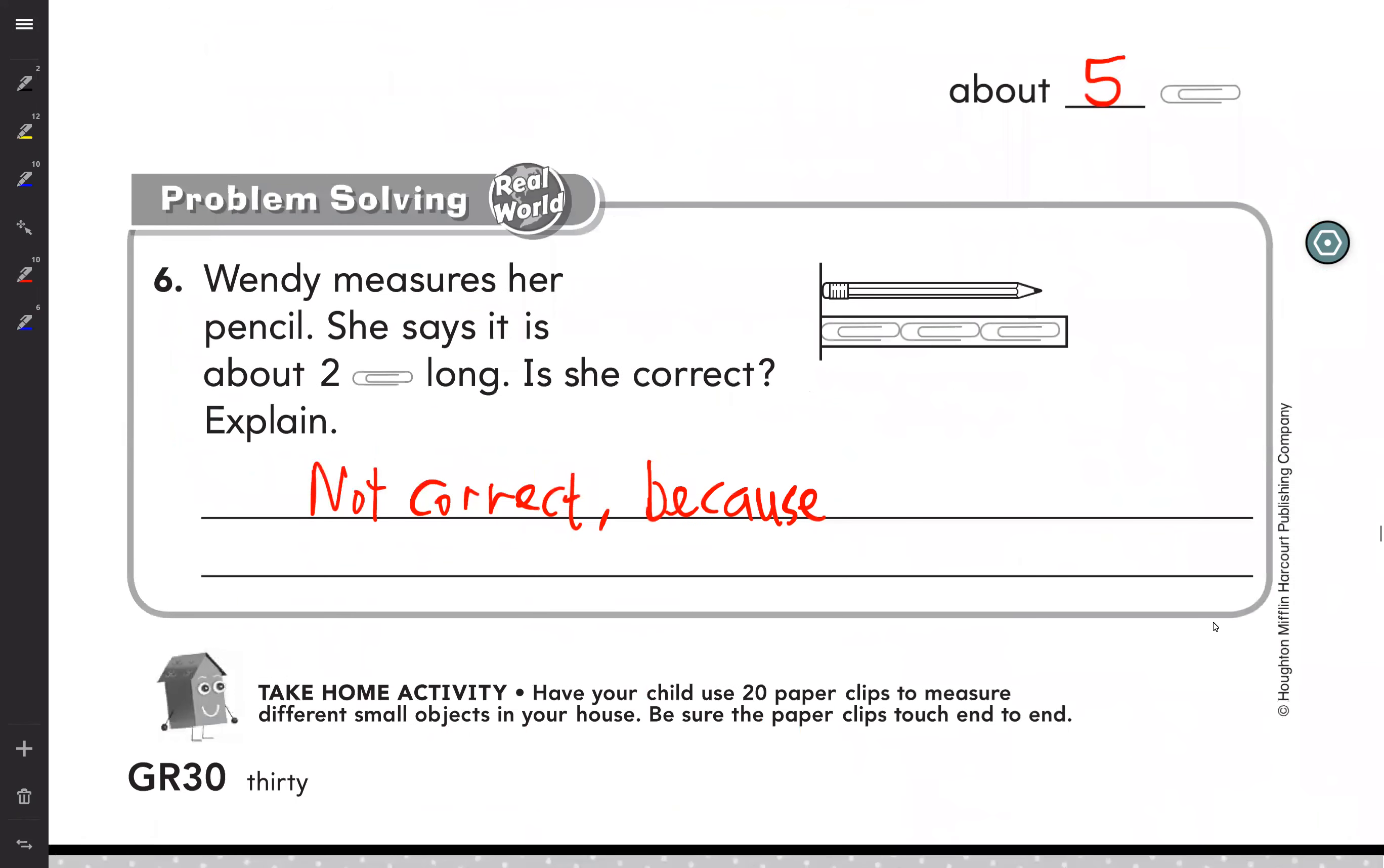Here, it's not correct because the end of the clip and the end of the pencil must line up. When we count, we see that there are three clips. It's about three.